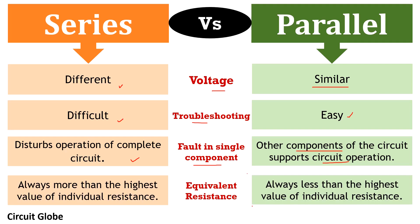Finally, regarding equivalent resistance — since we have considered resistors as the circuit elements — in a series circuit the equivalent resistance will always be more than the highest value of any individual resistance in the circuit. In contrast, in a parallel circuit the equivalent resistance will always be less than the lowest value of any individual resistance present in the circuit.